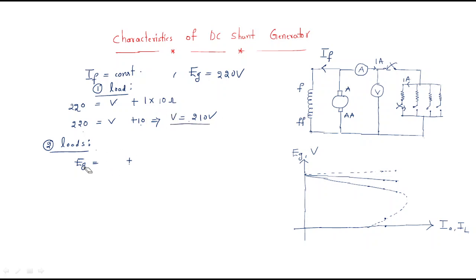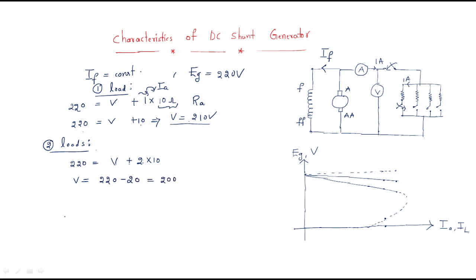When we use two loads with the generated EMF fixed at 220 V, and each load drawing 1 ampere, the total armature current becomes 2 amperes. The armature resistance drop is then 2 amperes × 10 ohms = 20 V. So the terminal voltage becomes 220 minus 20 equals 200 volts.